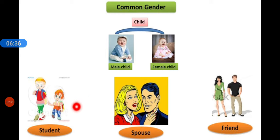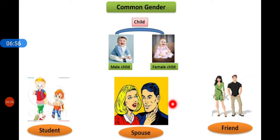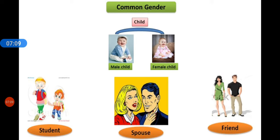More examples of common gender nouns: student — a student can be a boy or a girl; spouse — meaning husband or wife, the partner; and friend — can be masculine or feminine. All of these are common gender nouns.